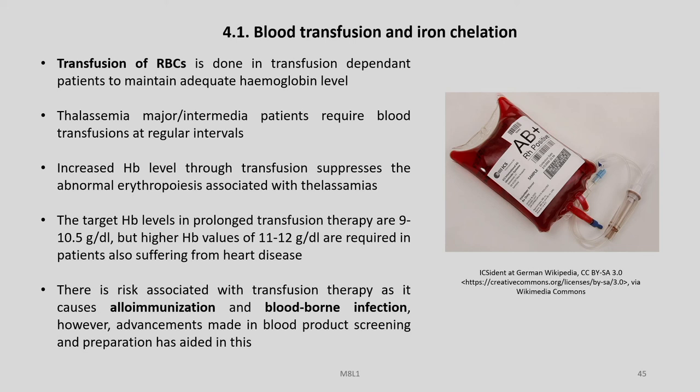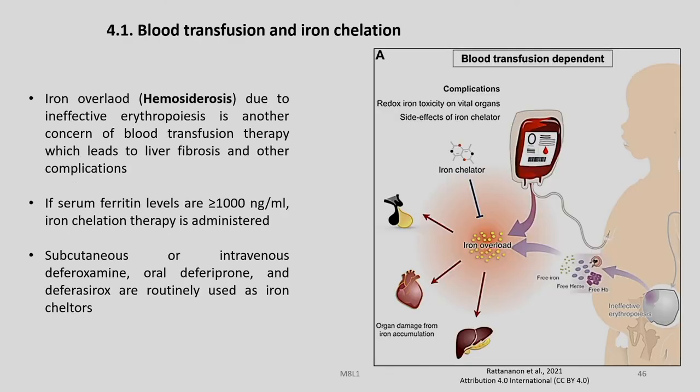Regarding blood transfusion and iron chelation: transfusion of red blood cells is done in transfusion-dependent patients to maintain adequate hemoglobin level. Thalassemia major and intermediate patients require blood transfusions at regular intervals. Increased HbA level through transfusions suppresses the abnormal erythropoiesis associated with thalassemia. The target HbA levels in prolonged transfusion therapy are 9 to 10.5 grams per deciliter, but higher values of 11 to 12 are required in patients also suffering from heart diseases. There is risk of alloimmunization and blood-borne infection, though advancements in blood product screening have helped overcome these shortcomings.